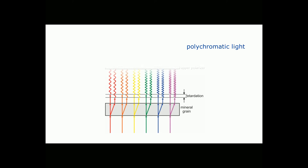This same phenomenon occurs for waves of all wavelengths. The drawing here shows the standard red, orange, yellow, green, blue, violet colors — but of course there are many, many other colors, and they're all traveling the same direction. Above the upper polarizer, some of these colors will be in phase and some will not, so some will add and become enhanced and others will become diminished.